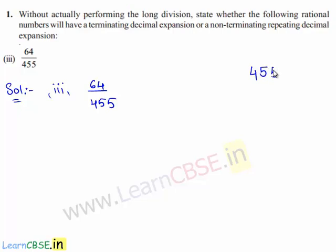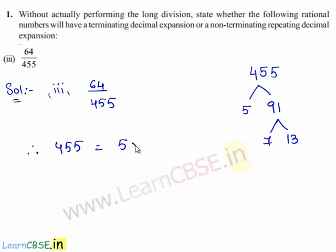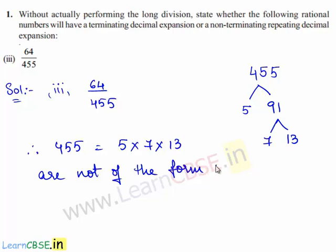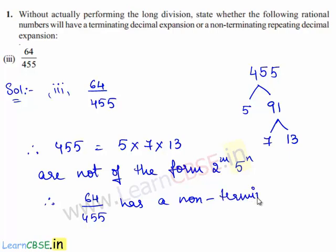Therefore, we shall first factorize 455. 455 can be written as 5 times 91, and 91 can be written as 7 times 13. Therefore, 455 can be expressed as 5 times 7 times 13. Therefore, the factors of 455 are not of the form 2^m times 5^n where m and n are natural numbers. Therefore, the given rational number 64 upon 455 has a non-terminating repeating decimal expansion.